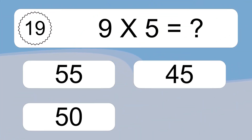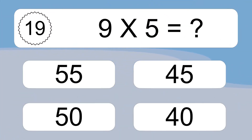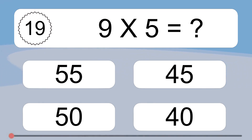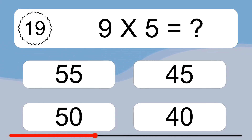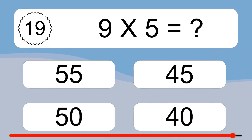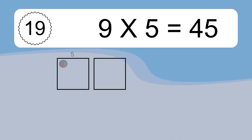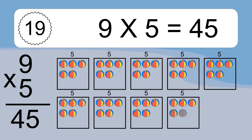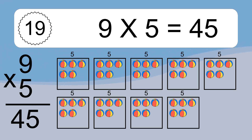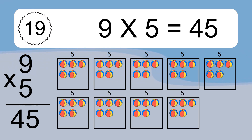Nine times five equals what? Nine times five equals forty-five. We have nine boxes, and each box has five colorful balls inside. If you count all the balls in all the boxes together, you will have nine times five balls. This equals forty-five balls.